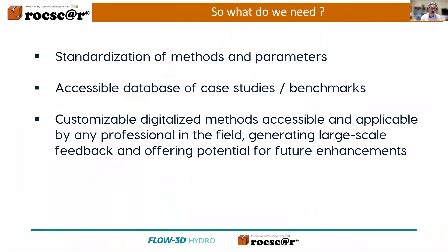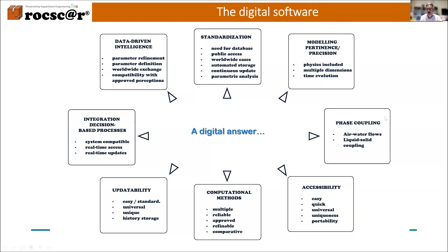What we would need is, first of all, a standardization of computational methods and their parameters, together with an accessible database of case studies. And finally, customizable, digitalized methods that become accessible and applicable by any professional engineer in the field — not just the specialists. This would generate large-scale feedback. We're speaking here about modeling pertinence: the main physics should be included, phase coupling between air, water, and rock. The computations should be easily and universally accessible, should implement the most pertinent computational methods available, should be updatable, allow integration into decision-making processes, and come to data-driven intelligence.